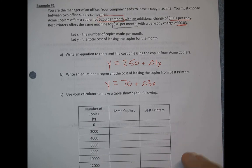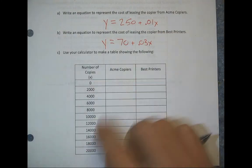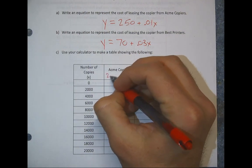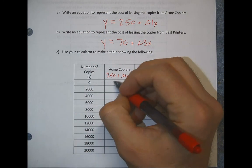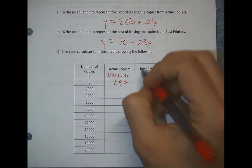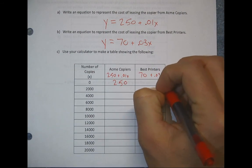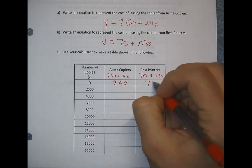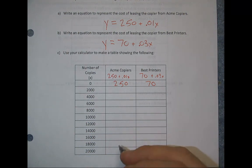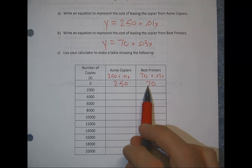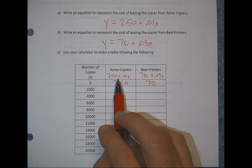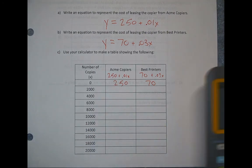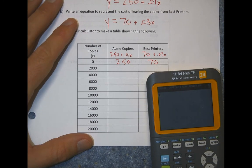Now we're going to use our calculator to make a table. For Acme — $2.50 plus $0.01 per copy — if you made zero copies, it costs $2.50. For Best Printers — $70 plus $0.03 per copy — zero copies means you're just paying $70. So if nobody uses the machine, the $2.50/month option is clearly cheaper. It all depends on how many copies you make. Today we're going to focus on how the graphing calculator can help us.